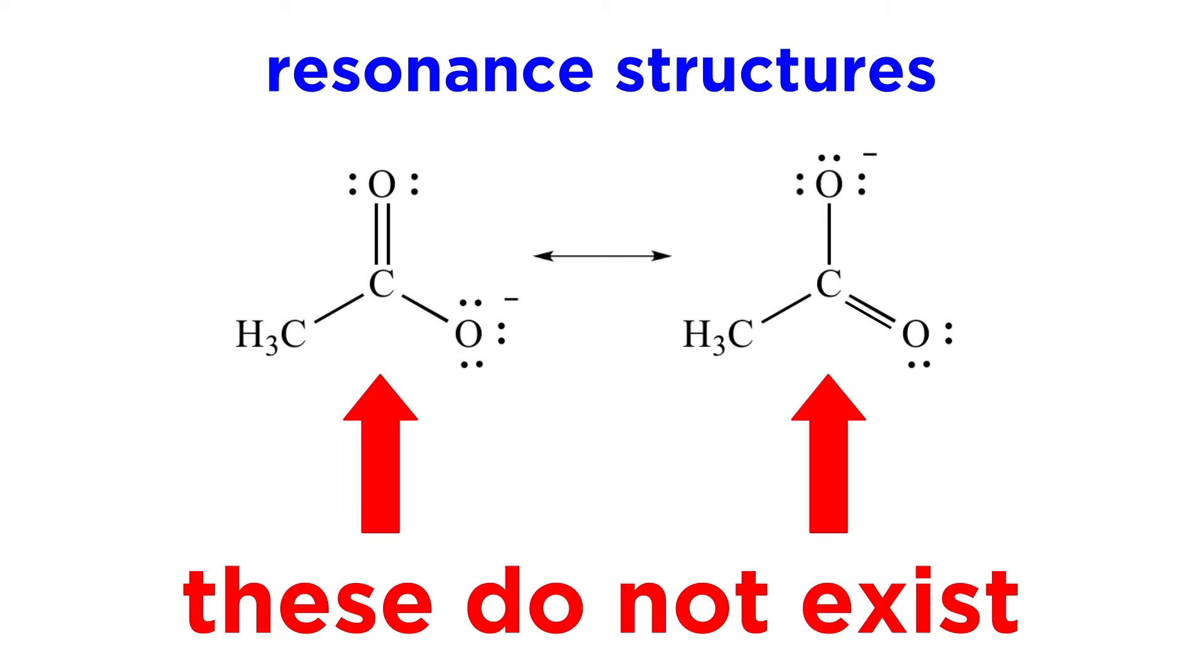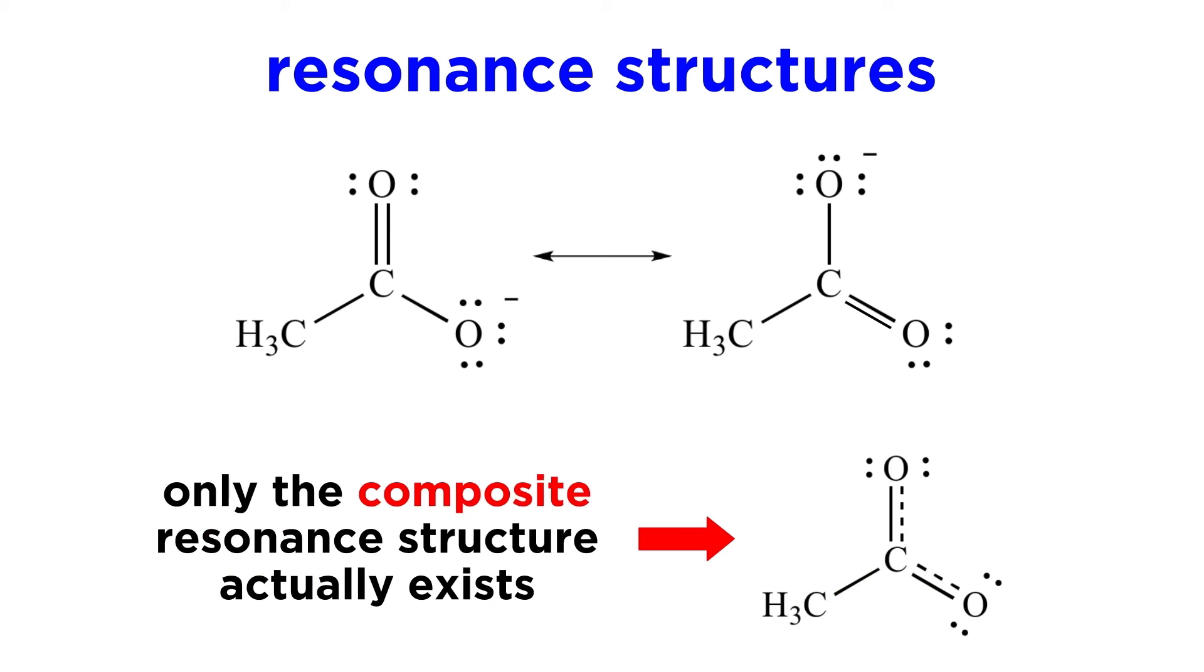Next, we must always recall that individual resonance forms are not real. They do not exist. They are simply a formalism with which we can describe bonding and reactivity. It is the composite resonance structure, or resonance hybrid, which truly exists.